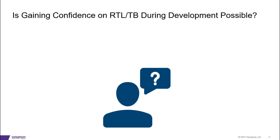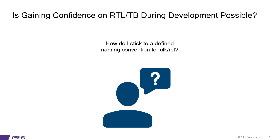Getting assurance on your RTL or test bench deliverables includes a variety of requirements, some of which are as follows. Firstly, how do I ensure that critical signals such as clocks or resets follow a pre-defined naming convention? Secondly, is the value of a certain parameter flowing to all the hierarchies, or is it getting overridden by some of the design elements in a particular scenario?